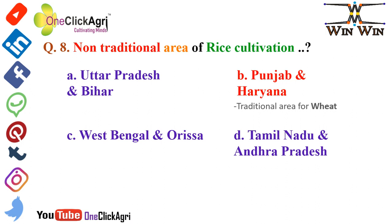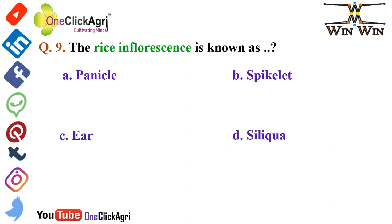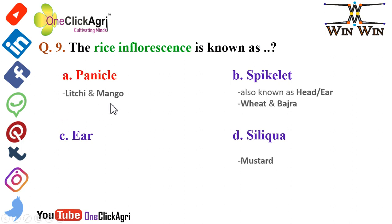The next question: the rice inflorescence is known as panicle. Lychee and mango inflorescence are also known as panicle. Spikelet is also known as the head or ear. Wheat and bajra inflorescence are known as spikelet. Mustard inflorescence is known as siliqua — please remember this.